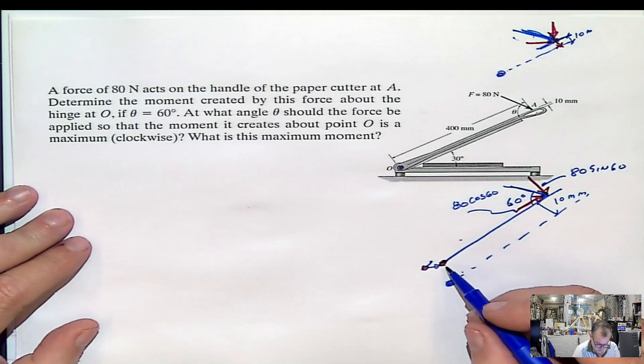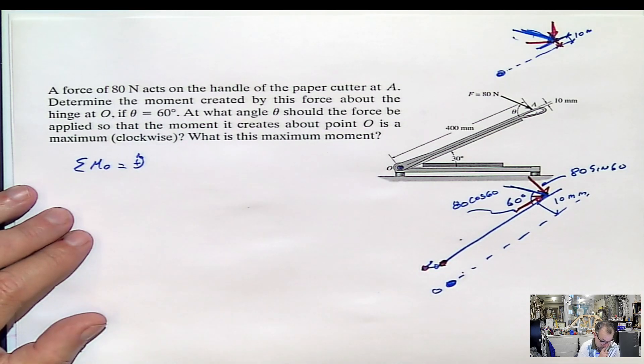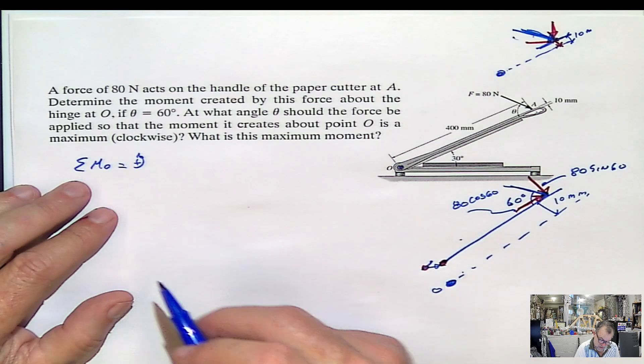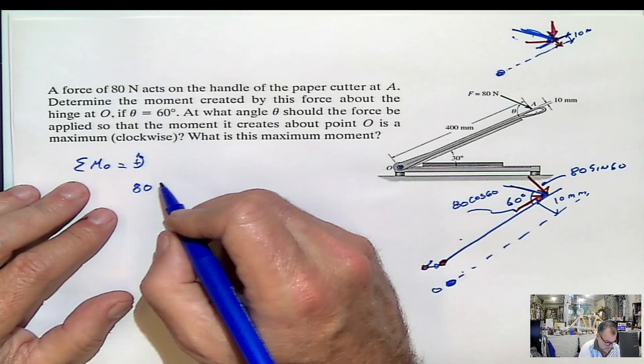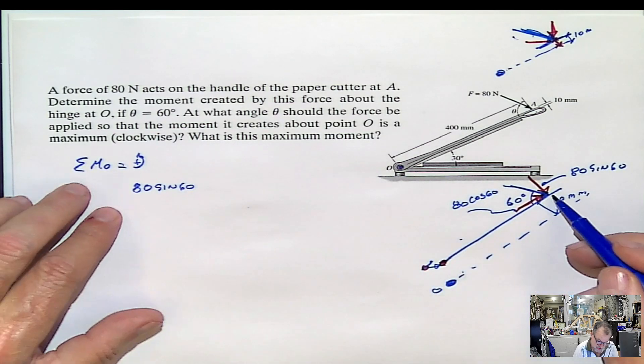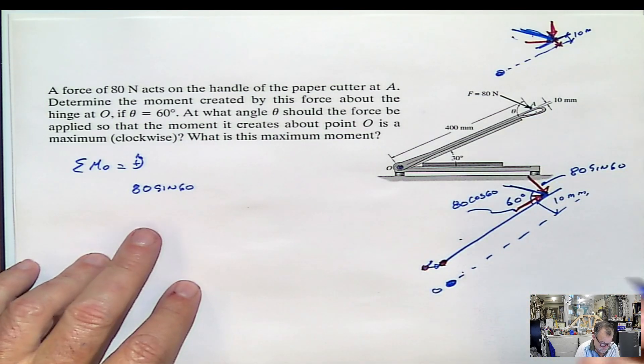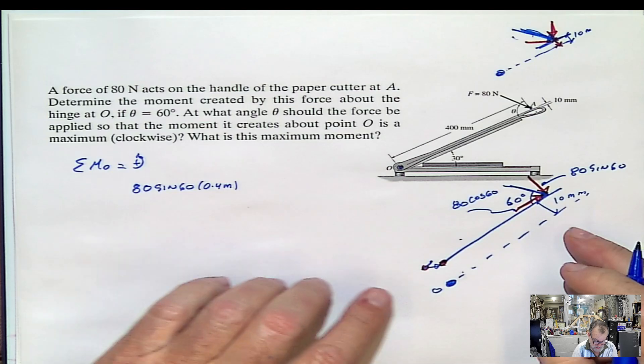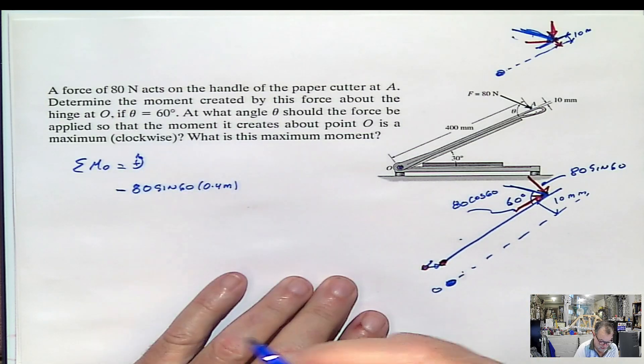Now if we do summation of moments about the point O, which is this one, assuming for the summation, I can do that if I want to, OK, counterclockwise is positive. Now it will be first, this force, which is 80 cosine 60, multiplied by this distance. And this distance is given here as 400 millimeters. It's 400 millimeters, you can put it like 0.4 meters. And what is the direction? The direction will be clockwise, meaning that will be negative then, because I assume counterclockwise is positive.